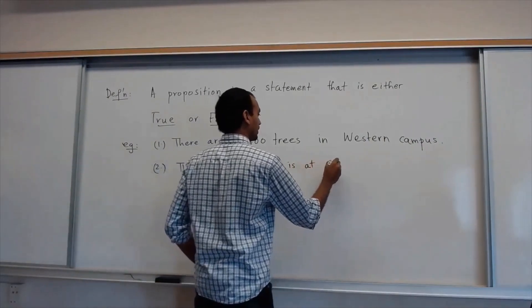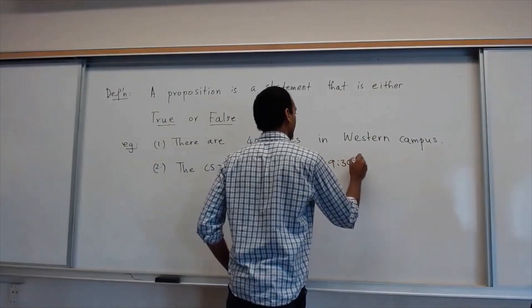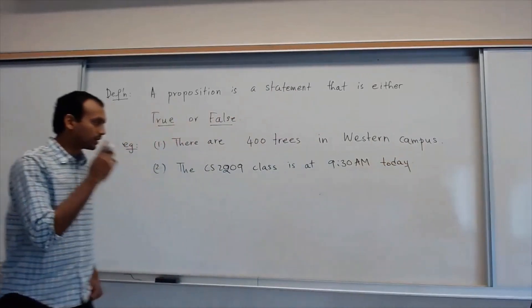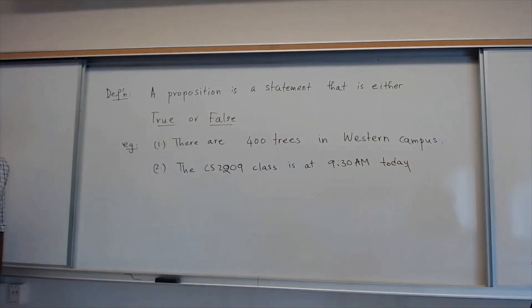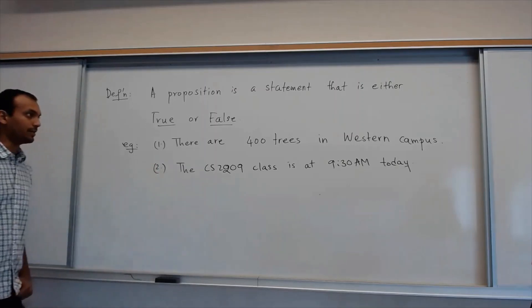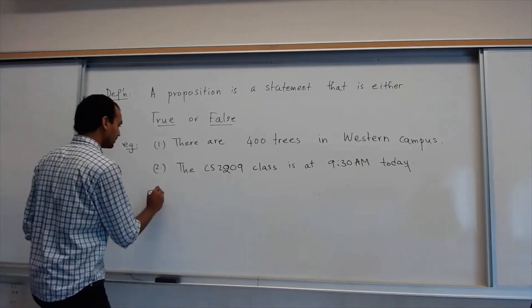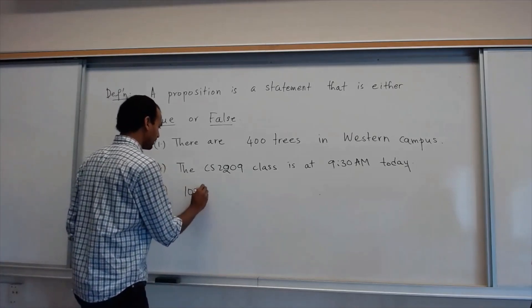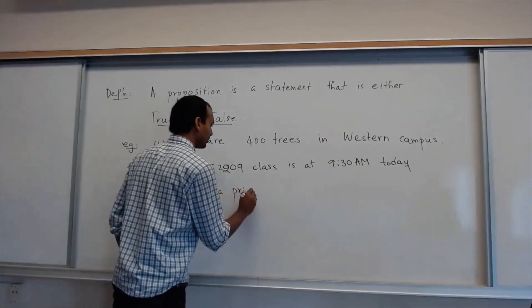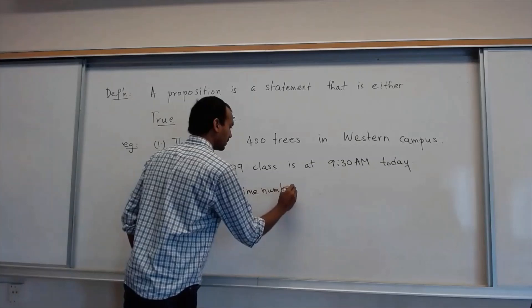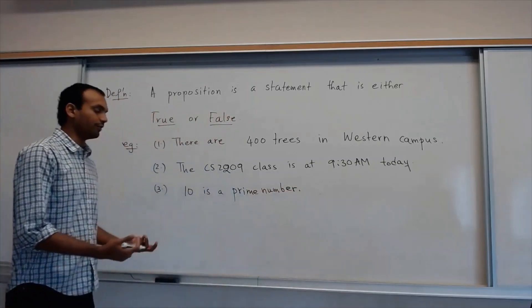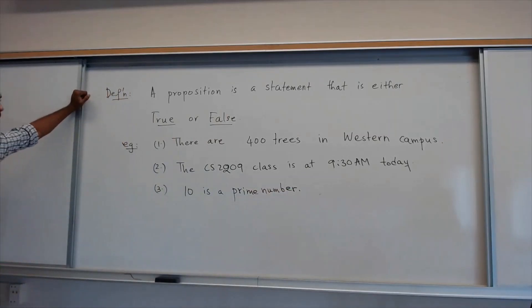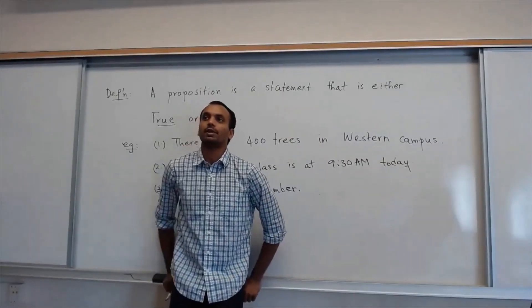is at 9:30am today. This also has a definite truth value, so these two are examples of propositions. And the third — let me give an example from mathematics — 10 is a prime number. This is definitely false, but it has a definite truth value. So these are examples of propositions. What are some statements which are not propositions?